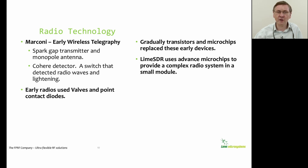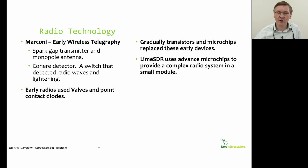The early wireless technology was developed by Marconi, who was using a spark gap transmitter with a monopole antenna and a coherer detector. Later radios used valves and point contact diodes, which were gradually replaced by transistors and then microchips. The Lime SDR represents an end product of a long chain of technology advances, using advanced microchips to implement this small radio module.